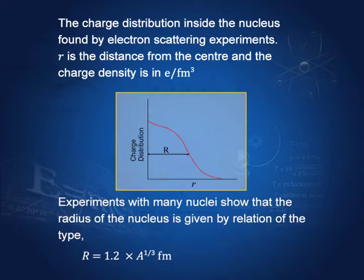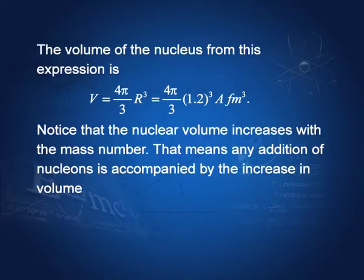The volume of the nucleus is (4π/3)R³ = (4π/3)(1.2)³ × A Fermi³. Notice that the nuclear volume increases proportionally with the mass number A — as A increases and you go to larger nuclei, the radius also increases.